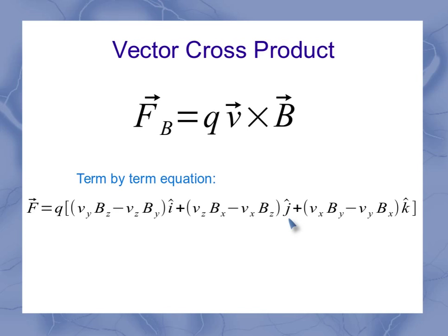Where I've got my J hat, which represents the Y component of the force, I've got X and Zs here. And for my Z component of the force, represented by the K hat term, that's where I've got X and Ys. So there's something in here about how each component depends on the other two components.